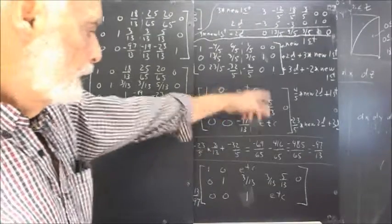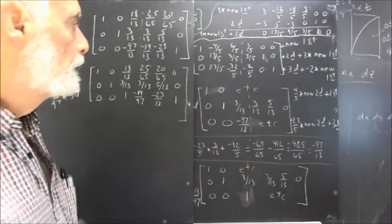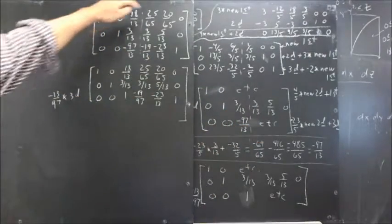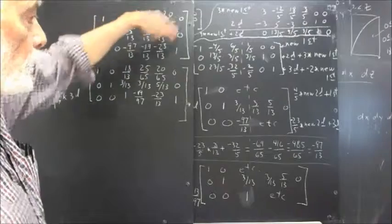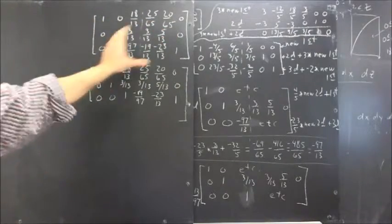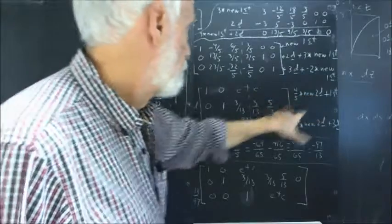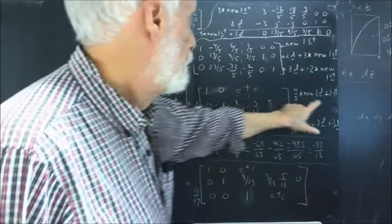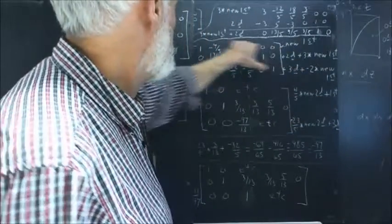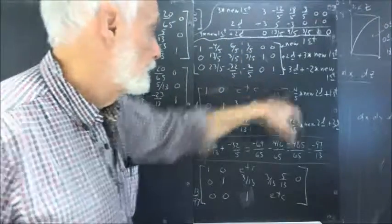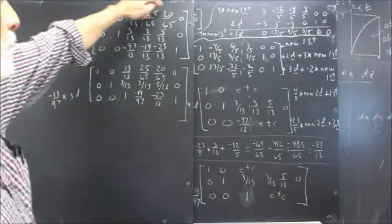Okay, in the last clip we got things down to here, and I've repeated this matrix here, except I've included all the calculations that go with these instructions. If we add four-fifths of the new second row, which is this row, to our first row, our existing first row, which is this one, and complete the calculations all the way across, this is what we get.